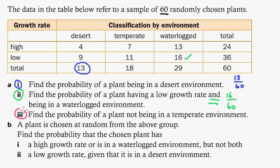Moving along. Find the probability of a plant not being in a temperate environment. Well, not being in a temperate environment. Temperate environment's right here. So we can just add those two together. 13 plus 29 is 42. Or just do 60 minus 18, which is 42. So that's going to be 42 over 60. And again, just leave it. You don't have to reduce it, which is nice.